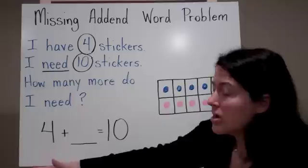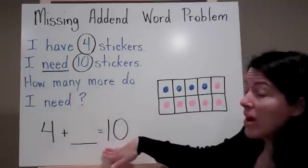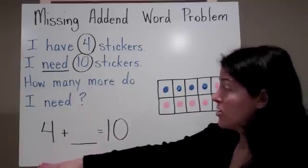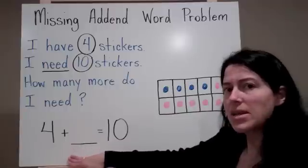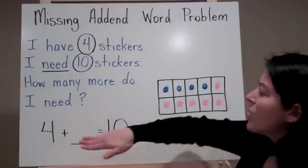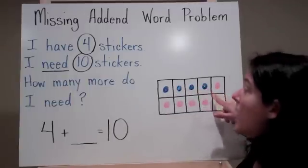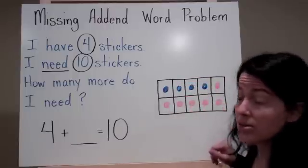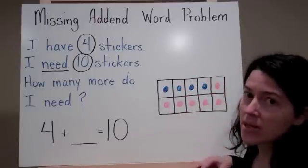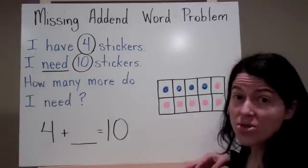I don't know how many more I need. But I do know that I want to have 10 when I'm finished. So I have a missing addend. So I start by drawing what I already have. I have my 4 stickers. I know that I want to have 10 stickers. So I complete my tens frame by coloring it in with a different color.